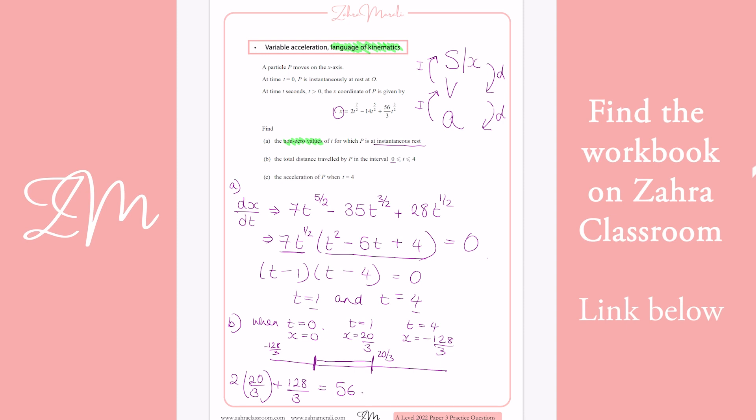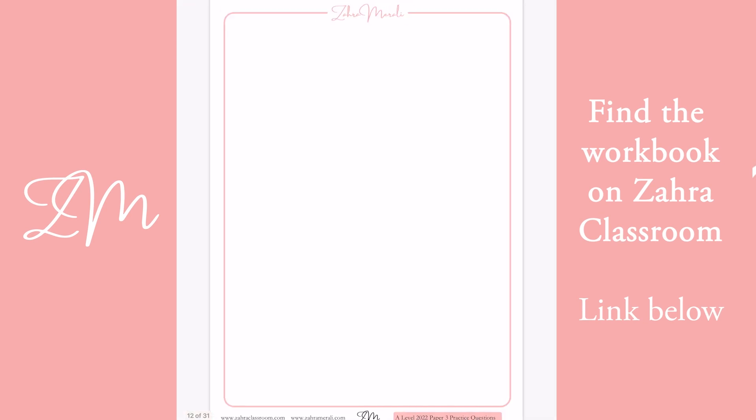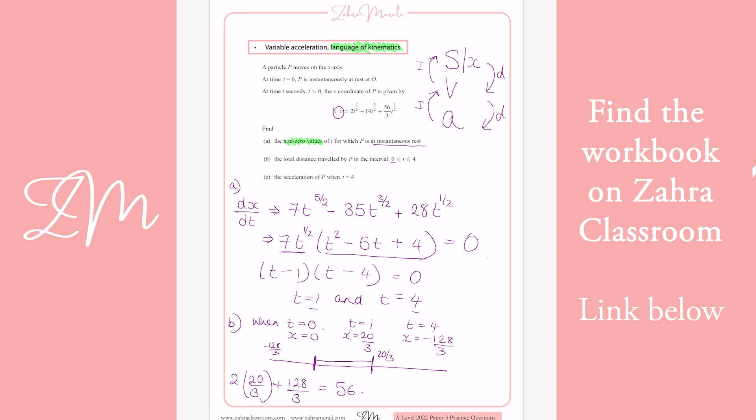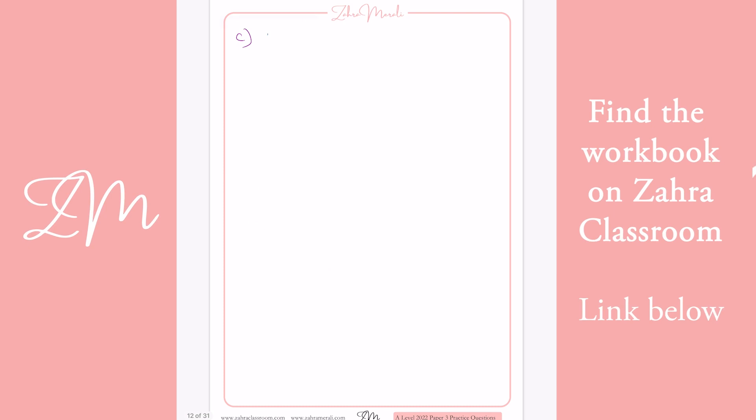Then we're told the acceleration of P when T is 4. So we've got the V to go to acceleration, we differentiate again. So if we grab our differential, our V equals all of this. So V equals, we differentiate again to give us A.